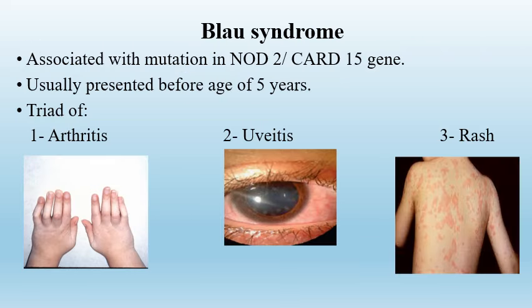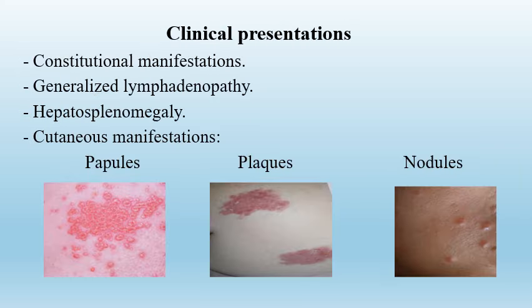Blau syndrome is due to genetic mutation and may occur either sporadically or in familial form. It usually presents before the age of five years and is characterized by a triad of polyarthritis, uveitis, and skin rash.